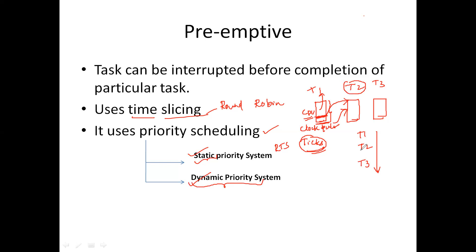Dynamic priority increases the flexibility of the system — you can change the priority. For example, if there is some alarming or risky condition in a real-time system, at that time you can change the priority of the task so that that particular task will be serviced first. You can change the priorities even when the task is running or executing — that is what we call dynamic priority.